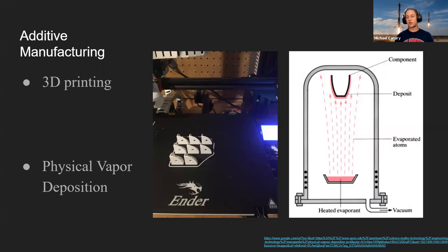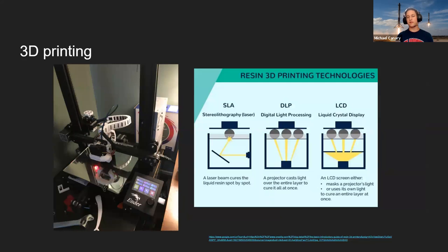So when we initially started this, there are like two big types of additive manufacturing. There is the 3D printing, and then there's the physical vapor deposition. So to start with 3D printing, this was my initial thought of how to actually create the targets. So on the left is one of a 3D printer I own, and that's showing what the FDM fused deposition method printing, where it takes a plastic, it melts it, and then it builds it up layer by layer. And then there's also resin, which uses light and a photoresist or a resin that hardens to create a shape or a part layer by layer.